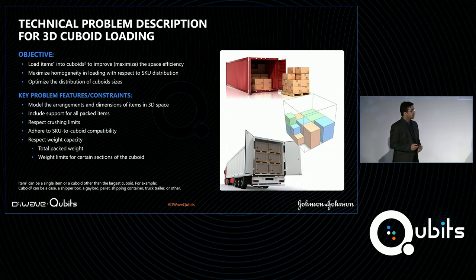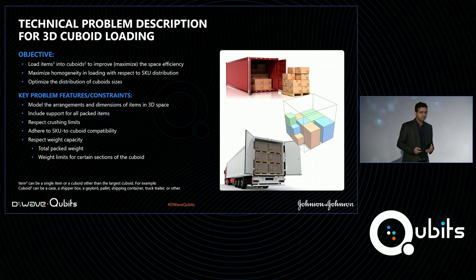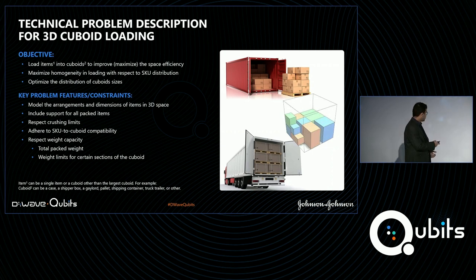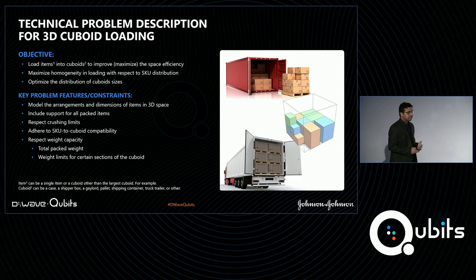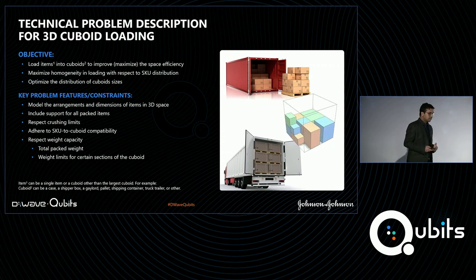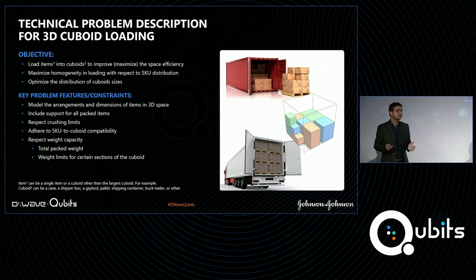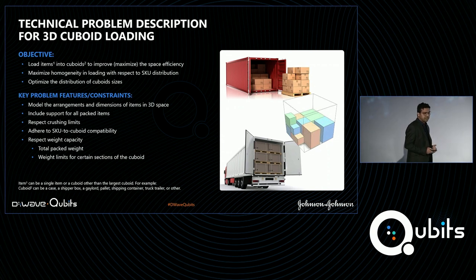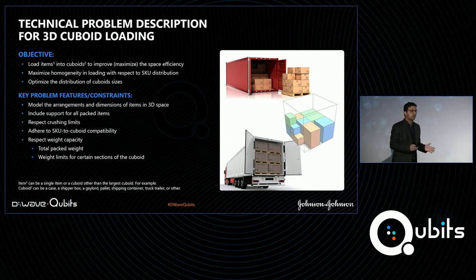The problem is as follows: we are trying to load a set of items into a set of cuboids to maximize space efficiency, or to minimize the number of cuboids needed. The cuboid can refer to a pallet, a shipment box, an ocean shipping container, a truck, and so on. Apart from maximizing space efficiency, we also want to maximize the homogeneity in loading with respect to SKU mix — items of the same SKU grouped together — and optimize the distribution of cuboid sizes.